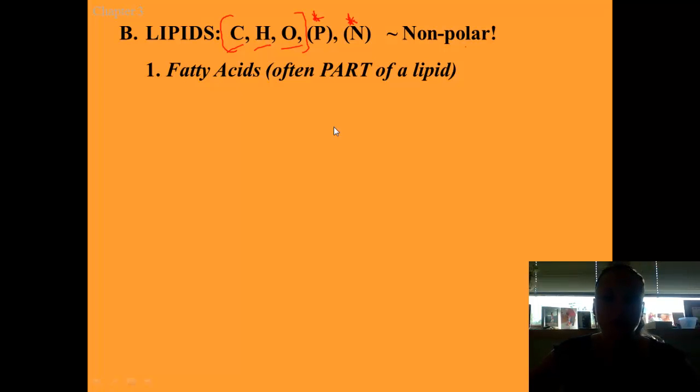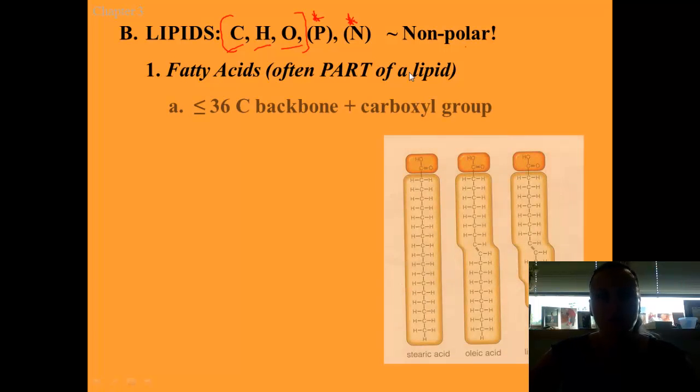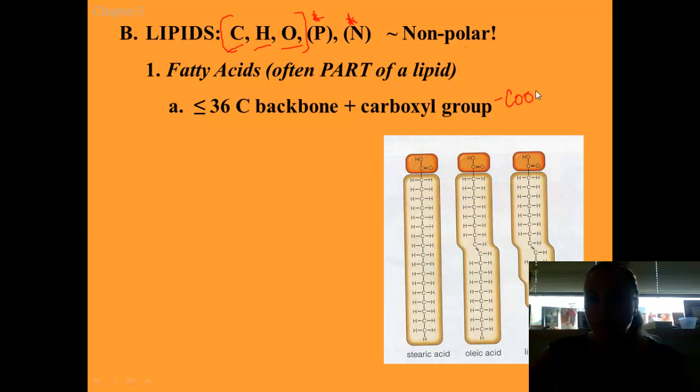A fatty acid is a chain of carbons and note by this, it's usually a backbone chain of really around about 36 carbons, slightly less of 36 carbon atoms, just that link together with a carboxyl group. Remember our carboxyl group, COOH, which is structured as a carbon double bonded oxygen to a hydroxyl group. So that would hang out at the end.